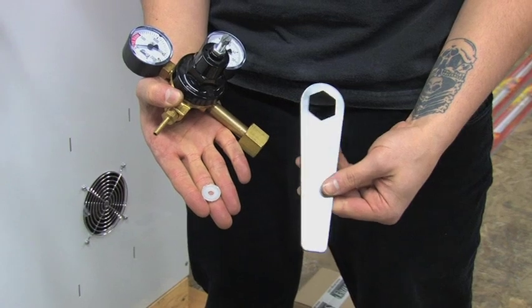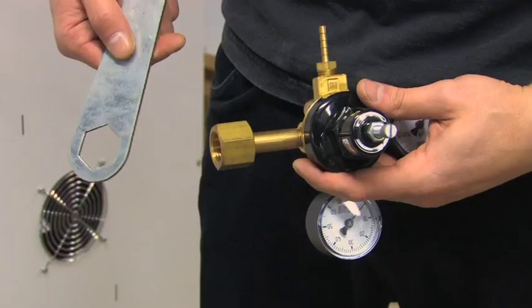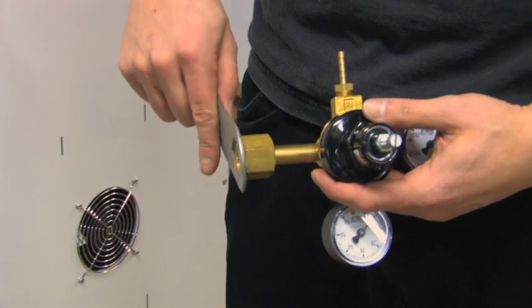Locate your CO2 regulator and open and remove all of its contents. Slide the wrench onto your CO2 regulator.